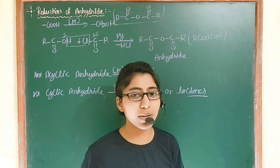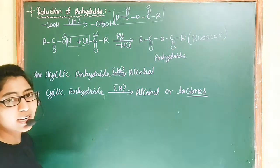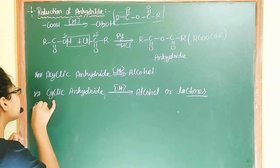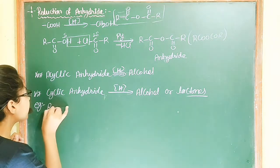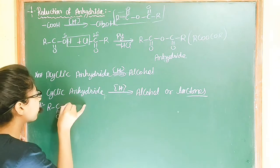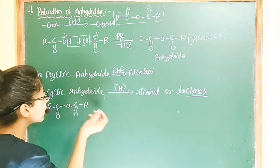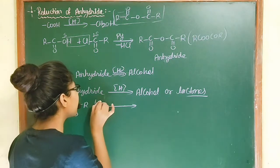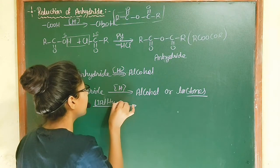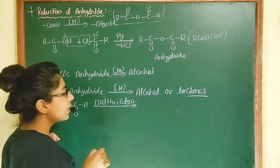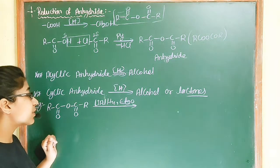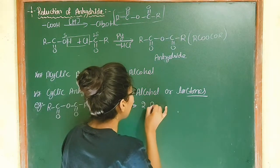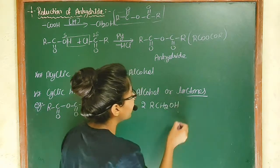Now let's discuss the reactions. For acyclic anhydride — R-C(=O)-O-C(=O)-R — when we do the reduction using a strong reagent like LiAlH4, the product of acyclic anhydride reduction is alcohol. Two molecules of 1° alcohol — R-CH2OH — are formed by the reduction of one molecule of anhydride.